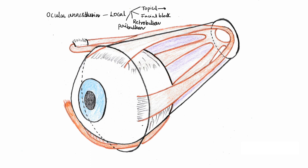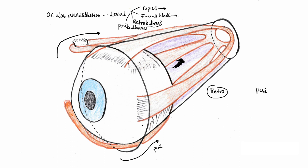Topical anesthesia involves instilling drops directly onto the cornea and conjunctiva. Facial block means injecting the anesthetic into the facial nerve — be it the root, trunk, or division. The basic difference between retrobulbar and peribulbar blocks is: in retrobulbar block, we inject the anesthetic directly into the muscle cone, whereas peribulbar block injects local anesthetic around the muscle cone, not into it.